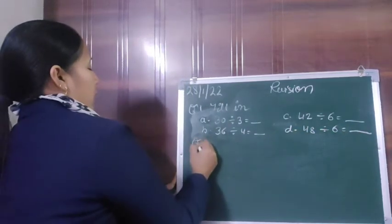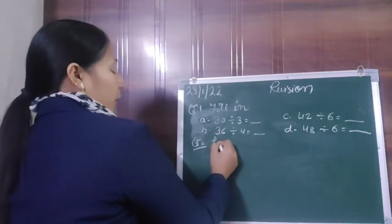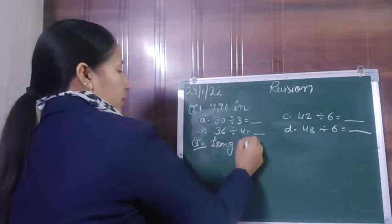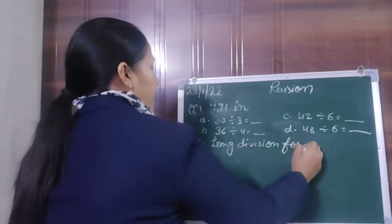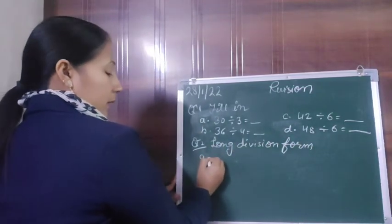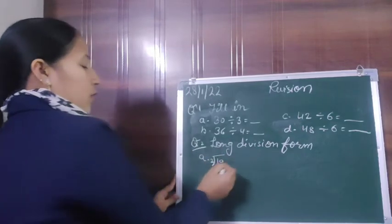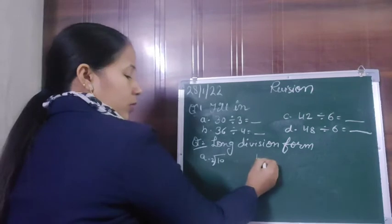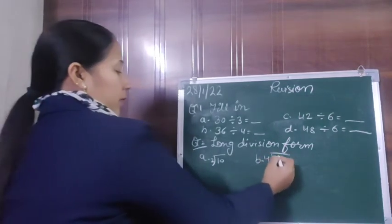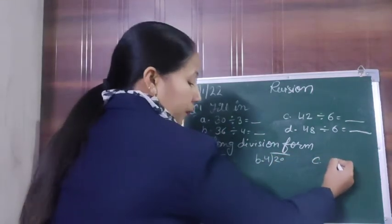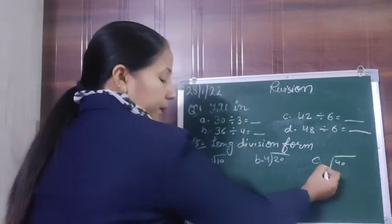Now let's do question number 2. Here you have to do this question in long division form. A is 10 divided by 2, B is 20 divided by 4, and C is 40 divided by 8.